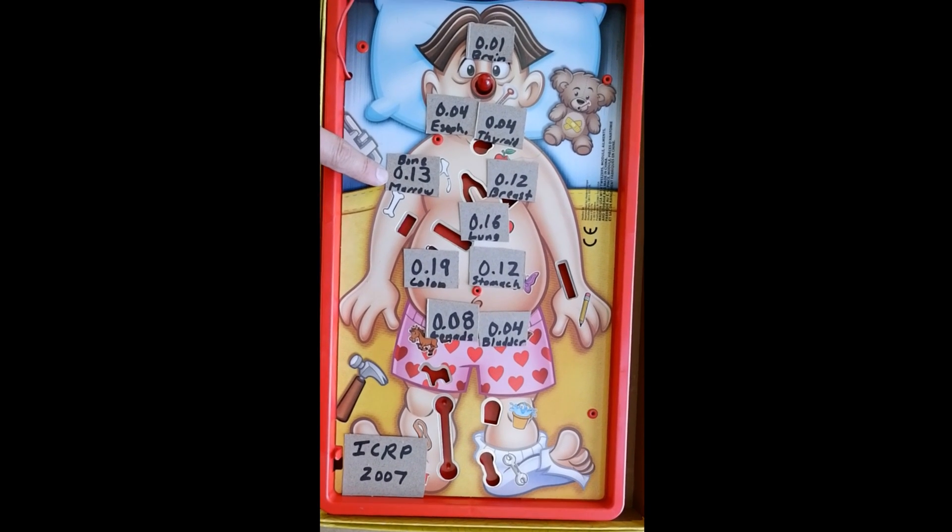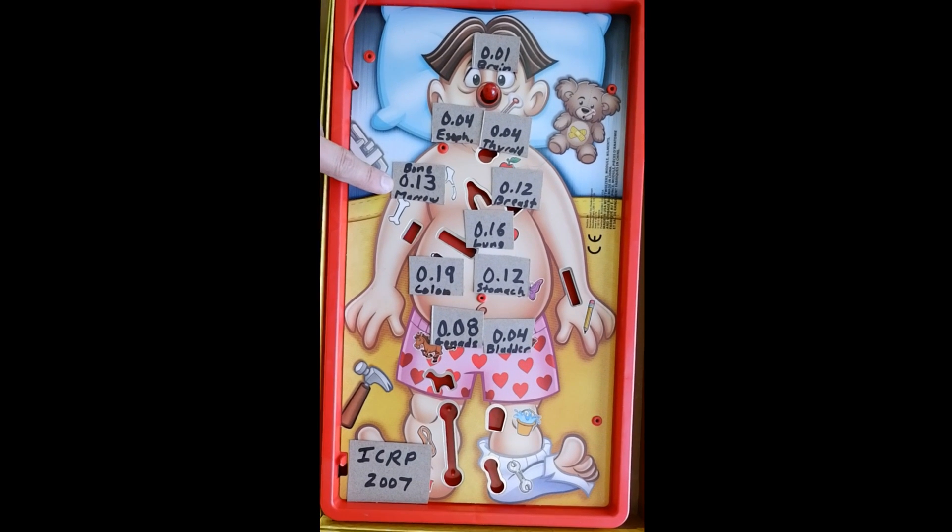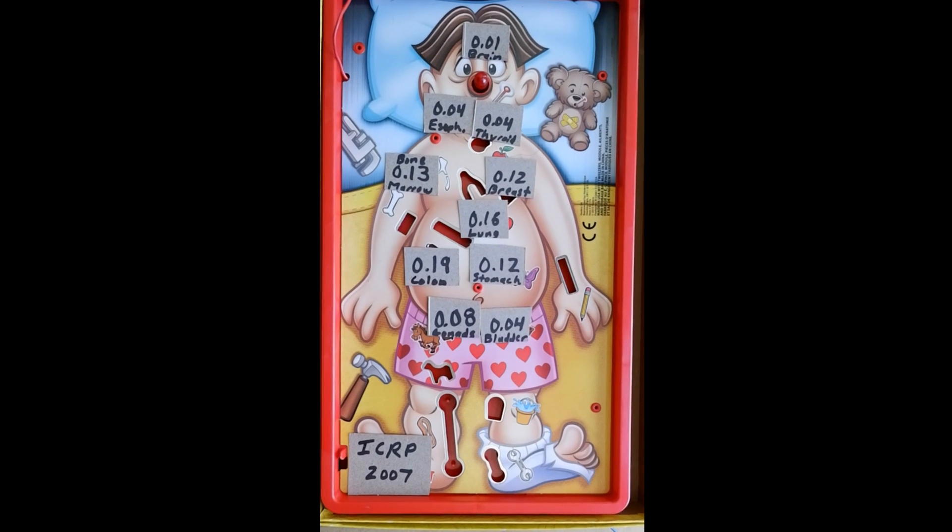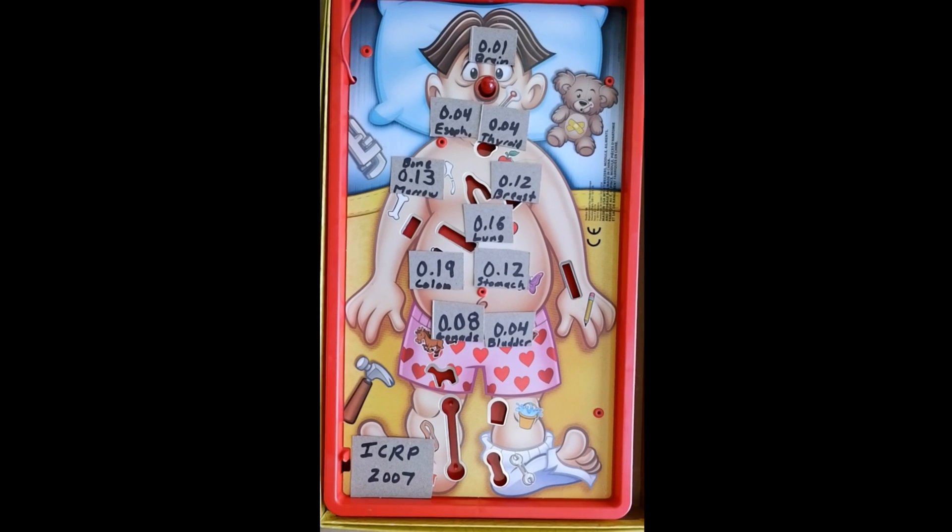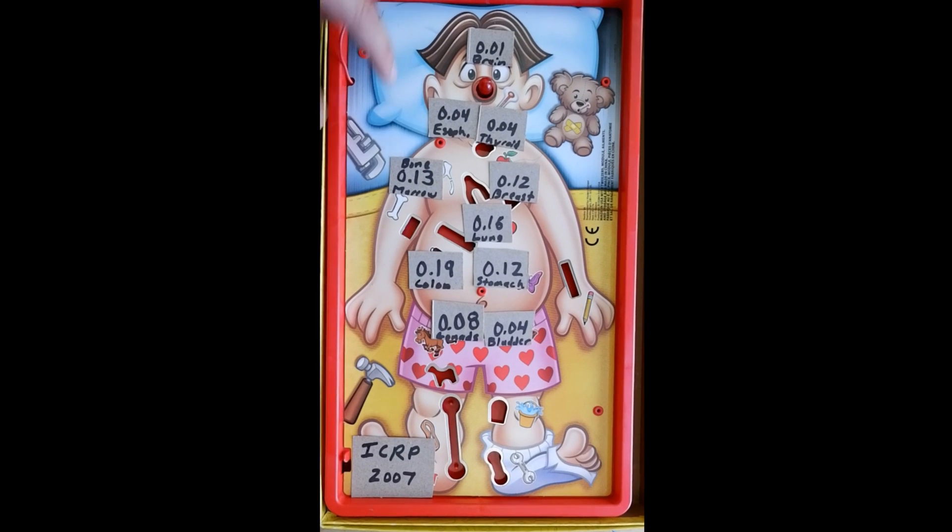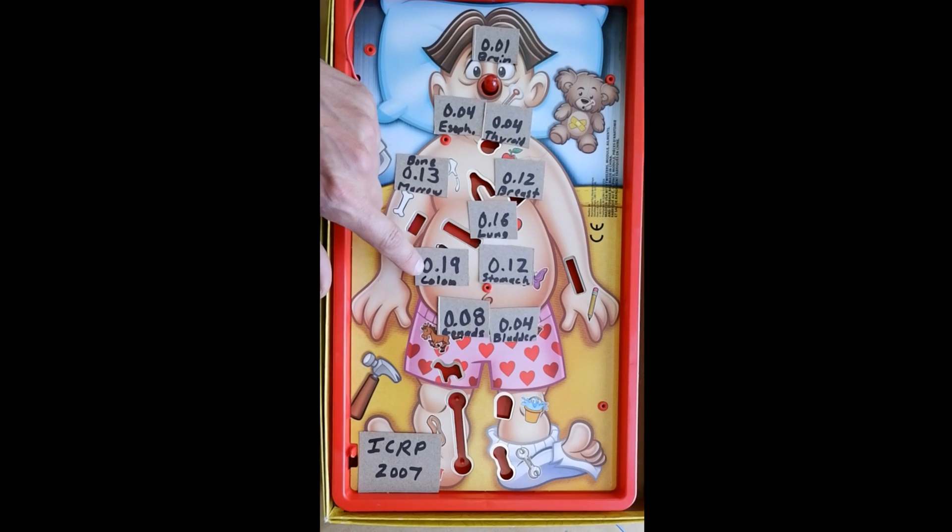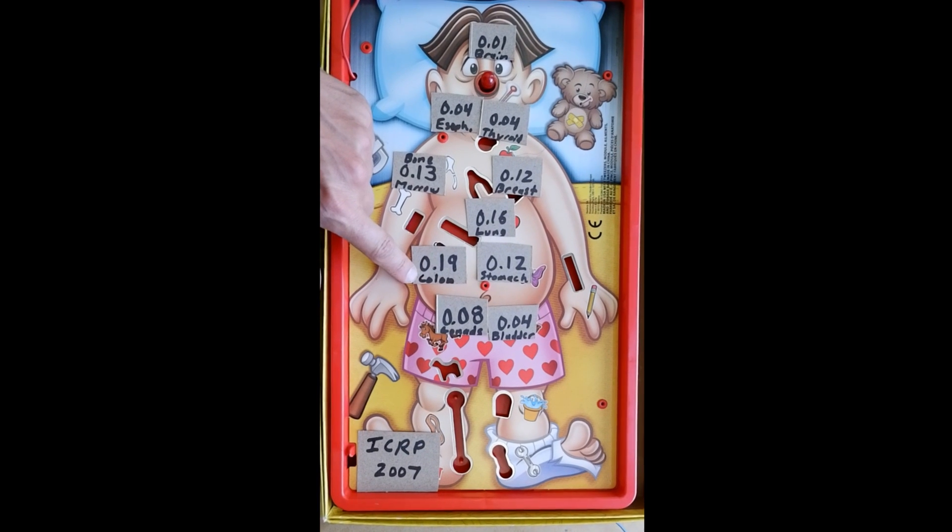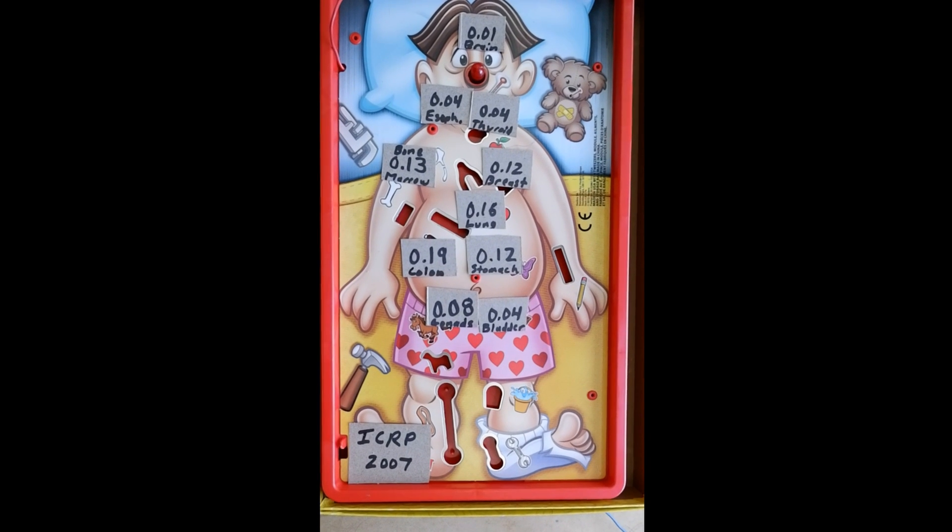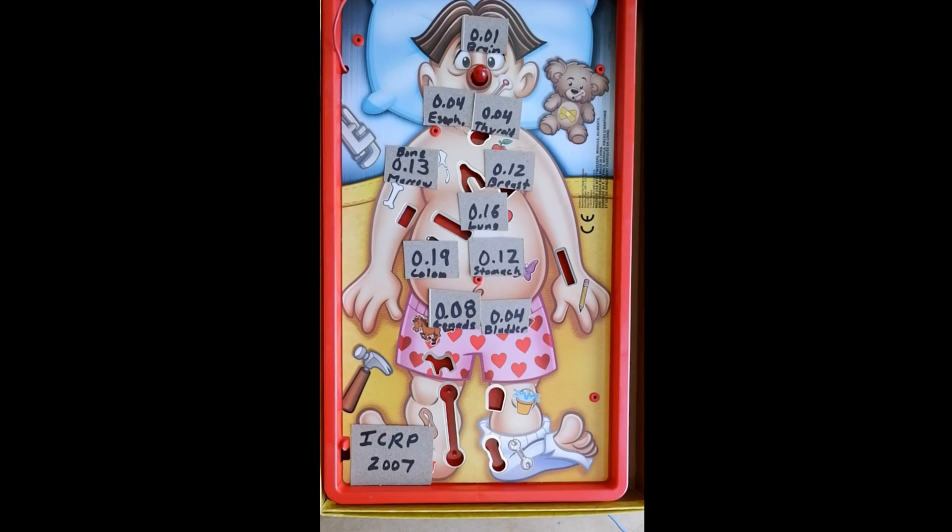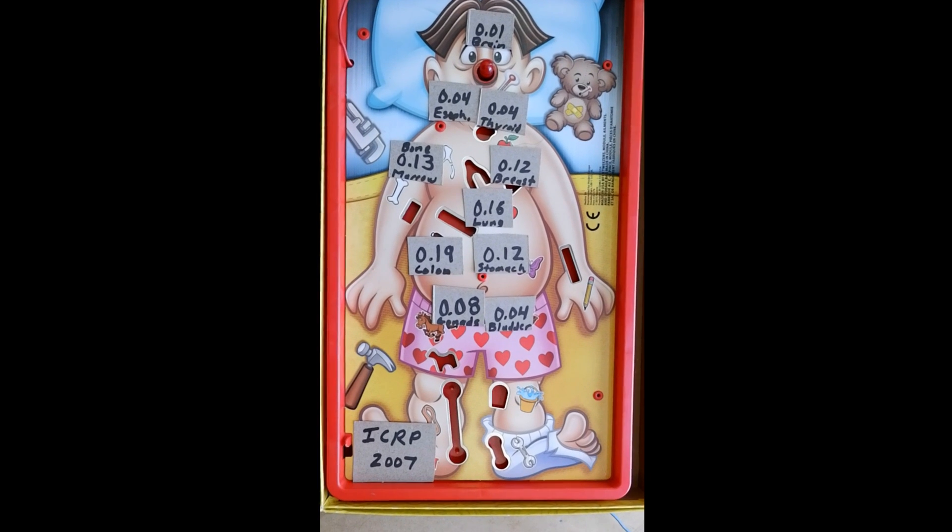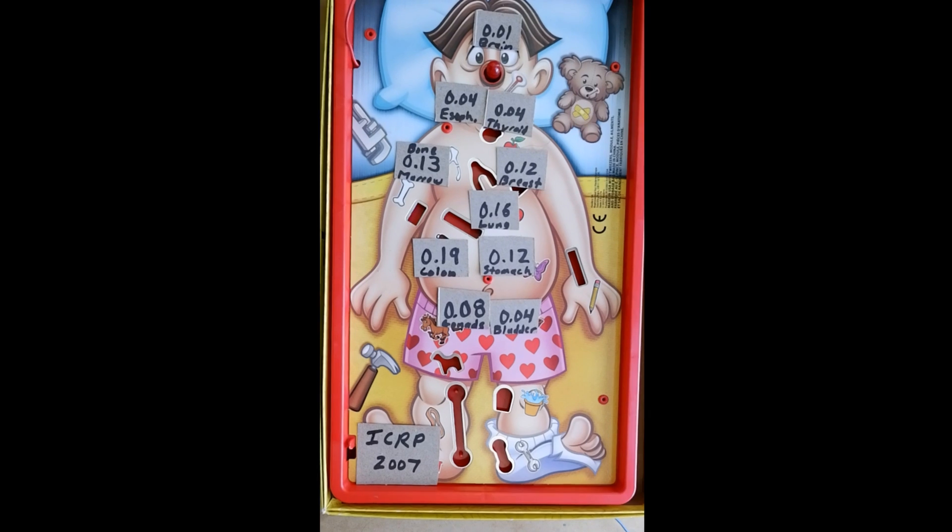For instance, the gonads are 0.08, the lung is 0.16, the breast is 0.12, the bone marrow is 0.13. These are some of the regions of the body that are more radiosensitive. For instance, those regions of the body are producing relatively rapidly as far as the cells, such as in the bone marrow. The colon is also 0.19, stomach is 0.12. These regions are higher in terms of their radiosensitivity. And then the brain is relatively fixed as far as the tissue is not reproducing quickly, and so the brain gets a very low weighting when we calculate the effective dose.